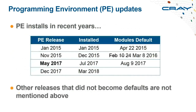Looking back over recent years: a January 2015 release was installed the same month and became default in April; a November 2015 release was installed in December and became default in March 2016. The current environment was released in May 2016, installed in July, and became default in August. The most recent programming environment — December 2017 — was installed in March 2018 but is not currently the default, so you need to actively switch to use the newer compiler or MPI.